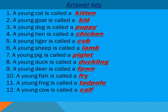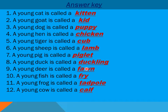The right answers: number one, a young cat is called a kitten. A young goat is called a kid. A young dog is called a puppy. A young hen is called a chicken. A young tiger is called a cub. A young sheep is called a lamb. Number seven, a young pig is called a piglet. A young duck is called a duckling. A young deer is called a fawn.